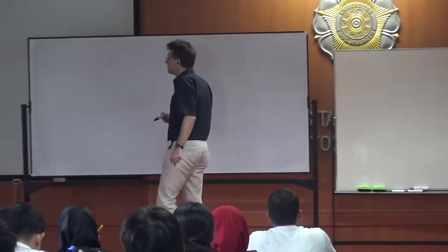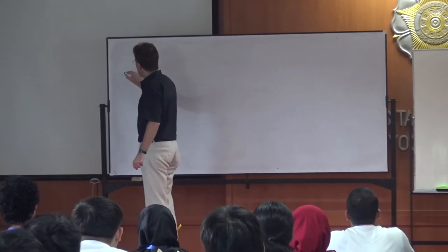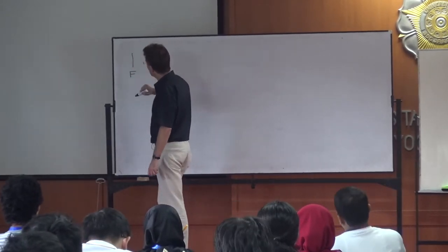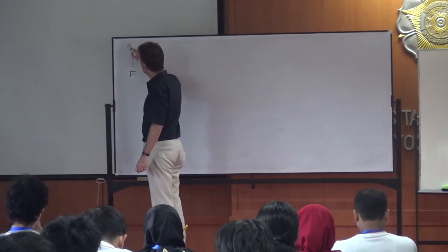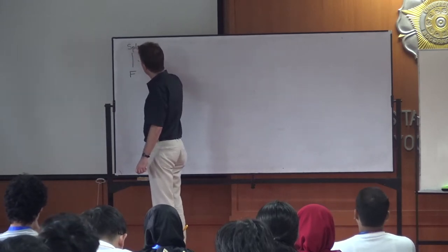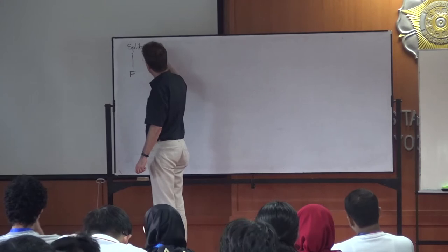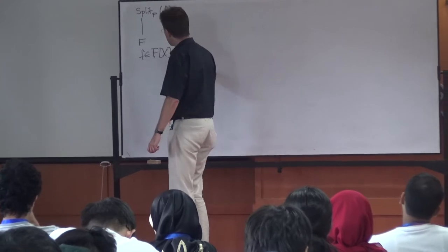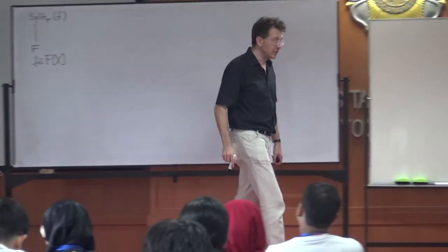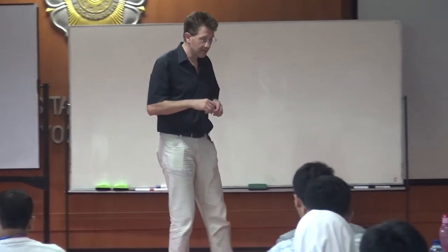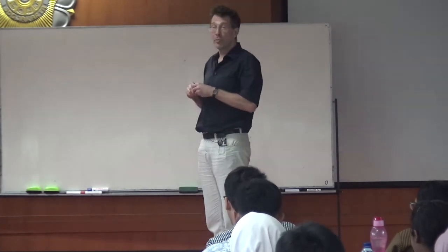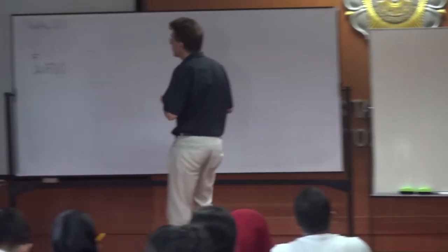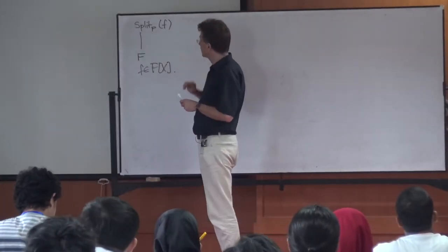Since what we did: our base field was called F, and we made a Galois extension by taking the splitting field of some polynomial over F — a polynomial with coefficients in F. You can do that for any field, and if you take separable polynomials, you get separable extensions, meaning that the roots of the polynomial are distinct.